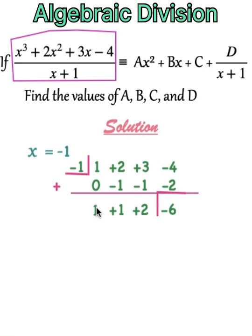From here, the coefficient of x squared is 1, the coefficient of x is plus 1, and the constant is equal to plus 2. Now, the remainder is minus 6, which is minus 6 over x plus 1.